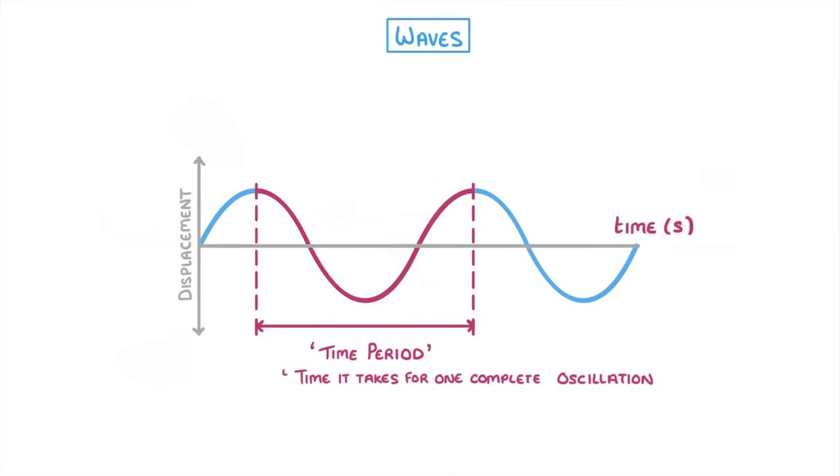The benefit of knowing the time period is that we can then use this equation here to work out frequency, which is measured in hertz and is the number of complete oscillations per second.